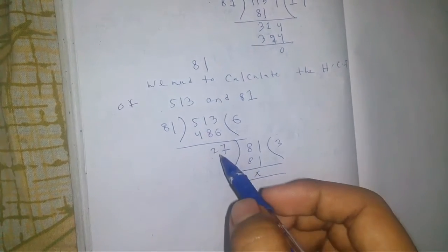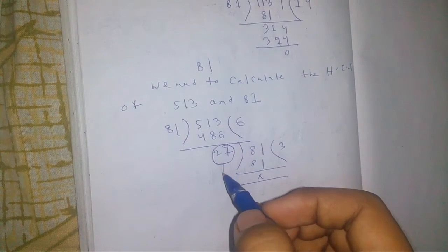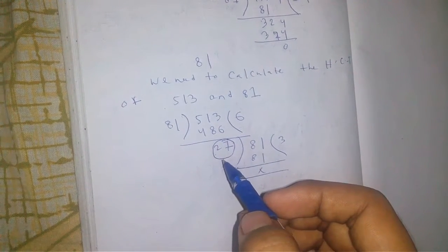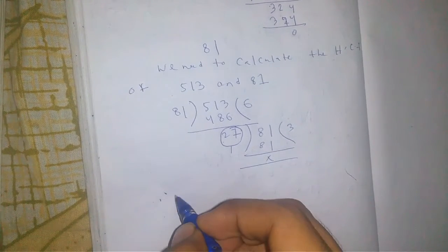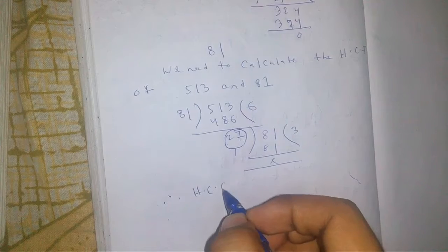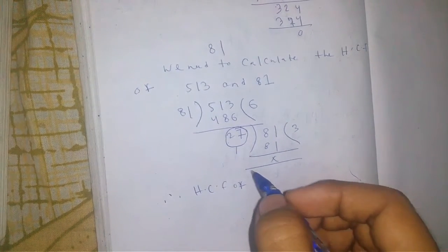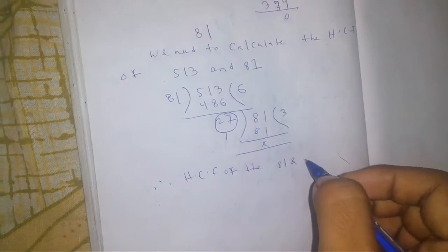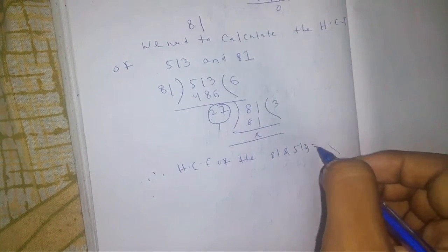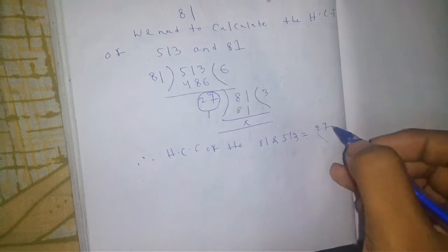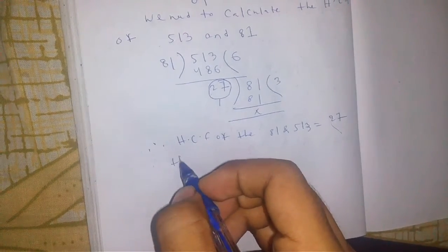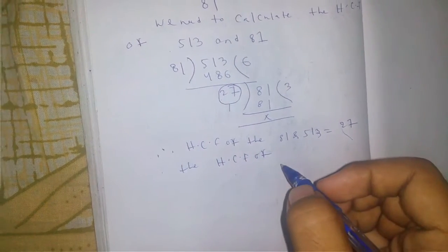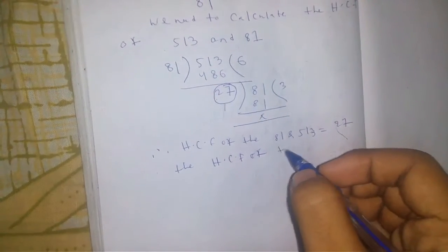We take this number as the HCF of 513 and 81, as it is the last divisor. So the HCF of 81 and 513 equals 27, which is the HCF of these 3 numbers.